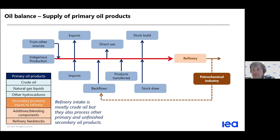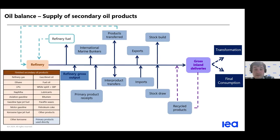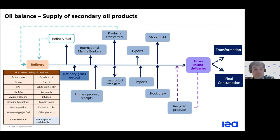There can also be what we call product transfers — for example, a product which changes specification and is reclassified as a primary product, which can happen with feedstocks. That's what we can say for the first part of the supply, which is the refinery input side. Then we have the second part of the supply process, which is after the refineries — how we supply primary products.